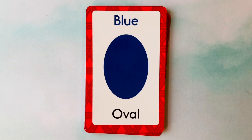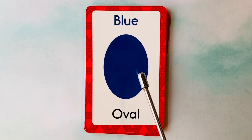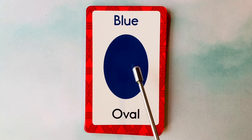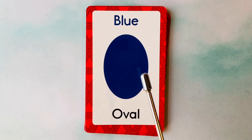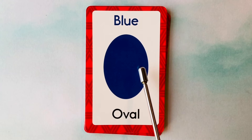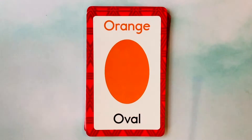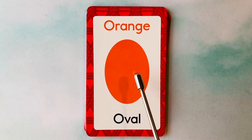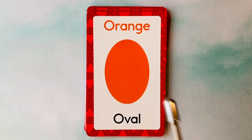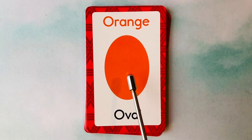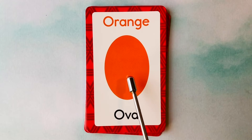Let's learn shapes and colors. This is an oval. What color is this oval? It's a blue oval. This is a blue oval. This is also an oval. What color is this oval? It's an orange oval. This is an orange oval.